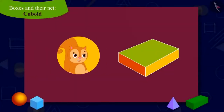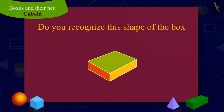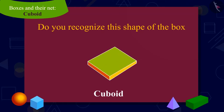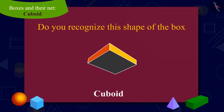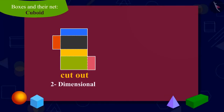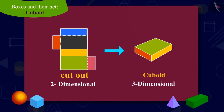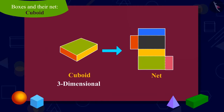Children, were you also shocked like Chanda? Do you recognize this shape of the box? It is a cuboid. Every face of a cuboid is rectangular. Do you know that two-dimensional shapes, like the cutouts of this cardboard, which when folded, we make three-dimensional shapes, like the cuboid? This is called the net of the shape.